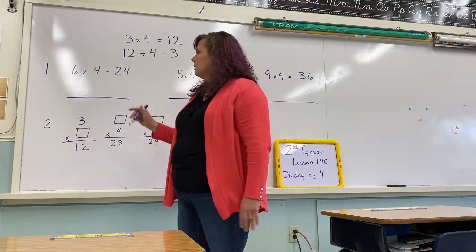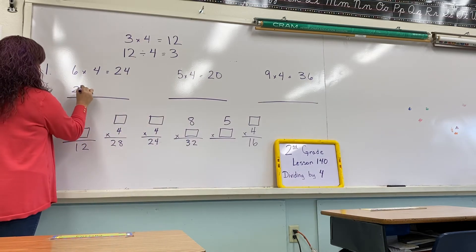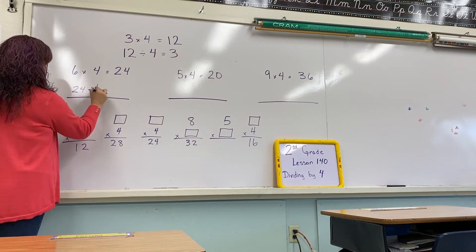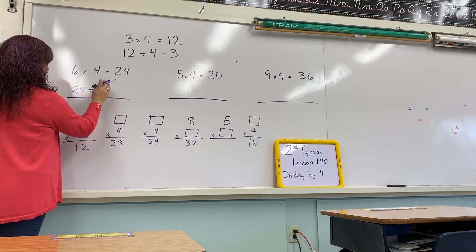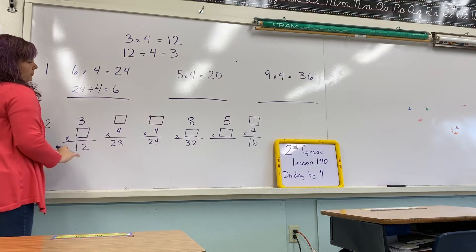We just flip it. So, we have 24 divided by 4, put it into 4 groups. How many is going to be in each group? 6. You're just flipping them.